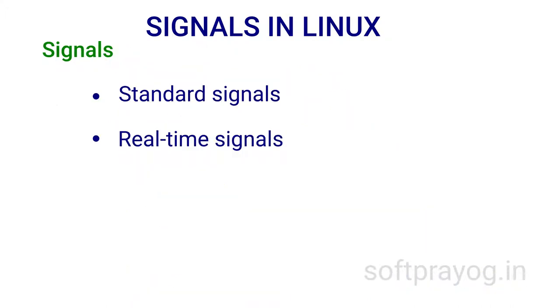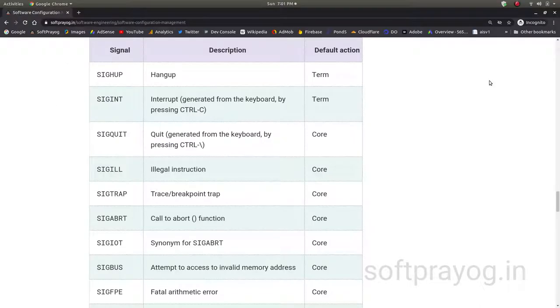There are two categories of signals: standard signals and real-time signals. There are about 31 standard signals which have been there since the early days of Unix.